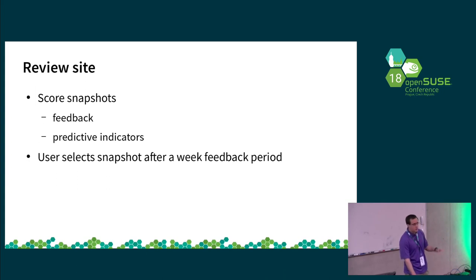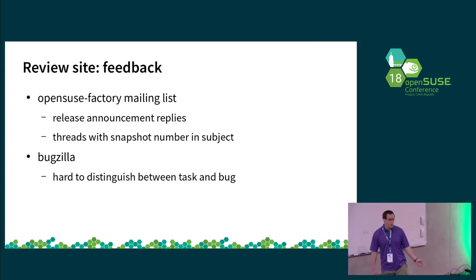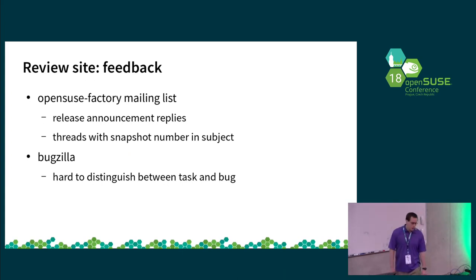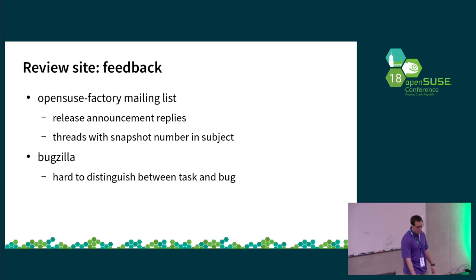The idea is that these snapshots sit for a week before being given an actual stability rating, with the intent to allow for feedback from users — both people not running snapshots who provide immediate feedback, and those actually waiting to update. The two main feedback sources are from the factory mailing list: the entire mailing list is downloaded and threaded, so anything that's a response to the release announcement is considered feedback, as are any threads referencing a particular Tumbleweed snapshot. Bugzilla isn't weighed very heavily because, without more work, you can't get too much useful information from it.